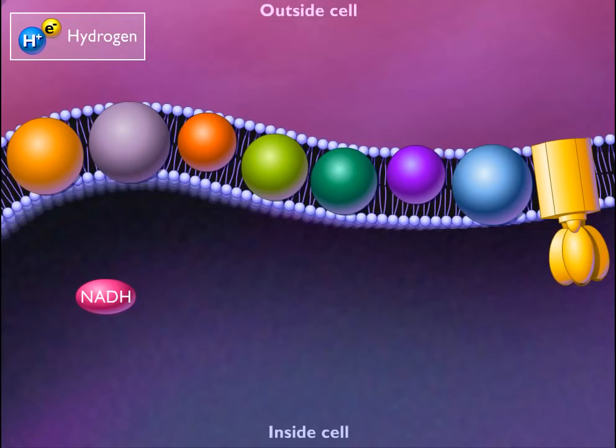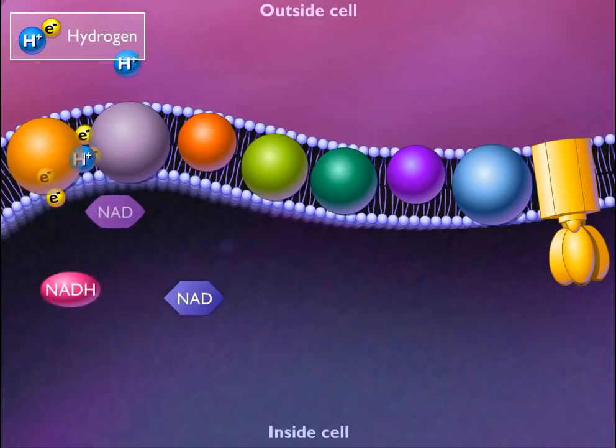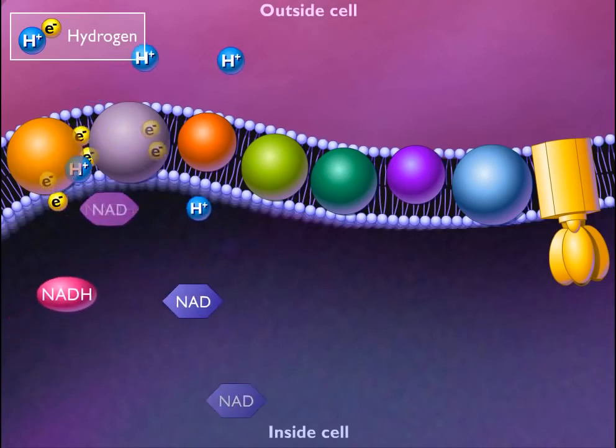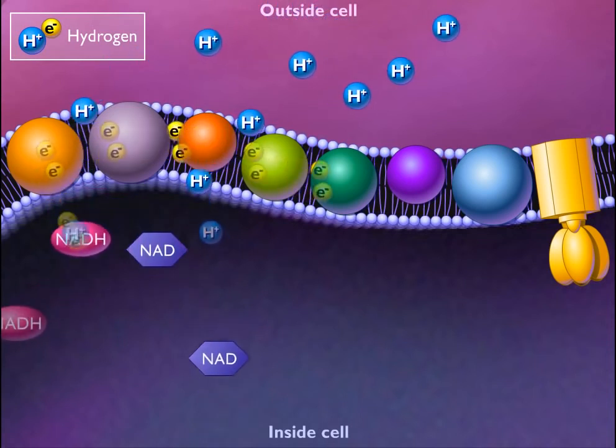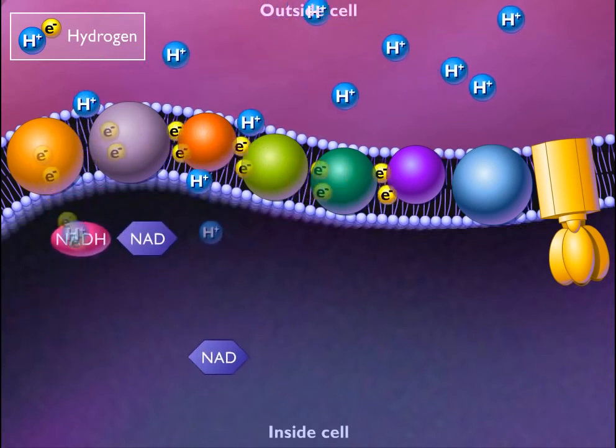Electrons enter the electron transport chain when NADH transfers its protons plus electrons to a membrane-embedded carrier protein. The electrons are sequentially carried along the electron transport chain while the protons are shuttled to the outside of the membrane.